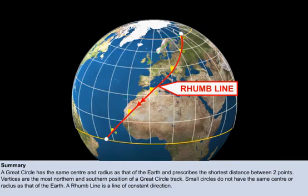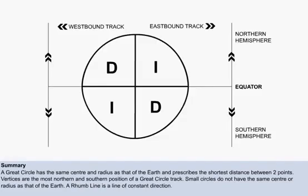A rhumb line is a line of constant direction. It is also important to recall the aid memoir DIID to solve some navigational problems.